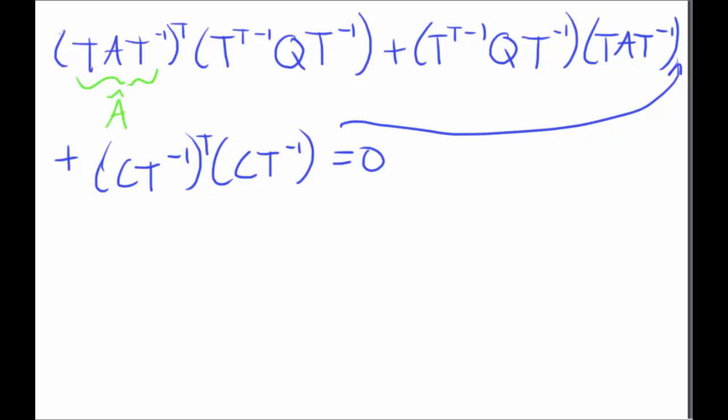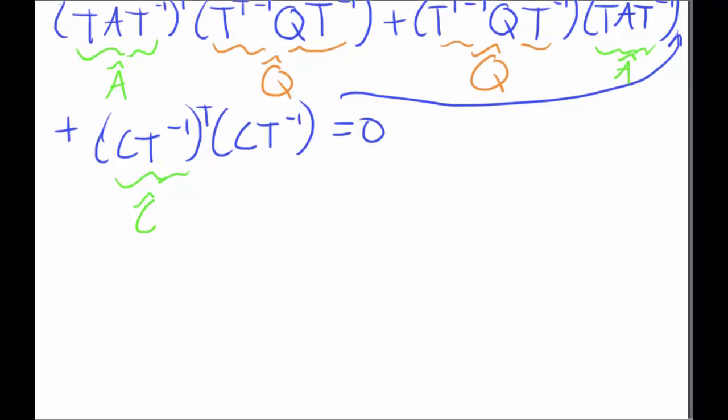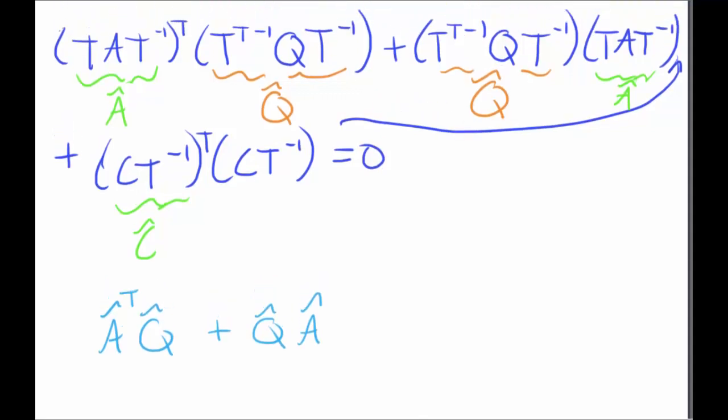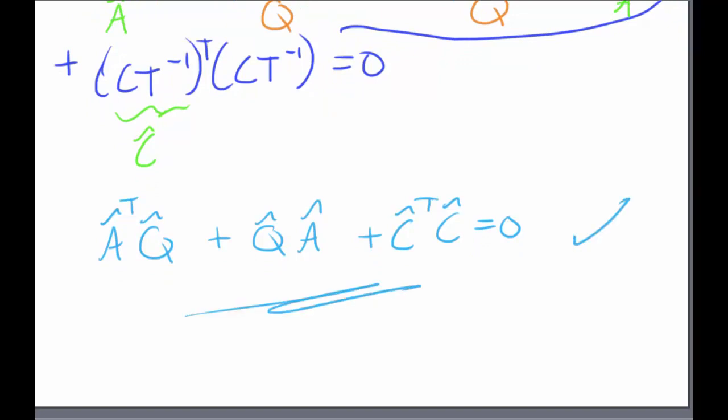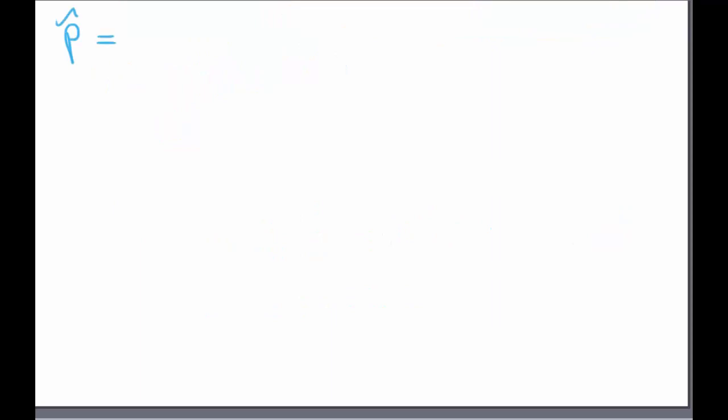And you can see that the first part is the A hat again and there's another A hat over here. This is C hat. So then I can rewrite the entire equation with the new Q hat. So I can rewrite the new balanced system as A hat Q hat plus Q hat A hat transpose plus C hat transpose C hat is equal to zero. So now we can find the new controllability gramian, which is the balanced one, and the observability gramian, which is the balanced one. And it's just these two equations here.